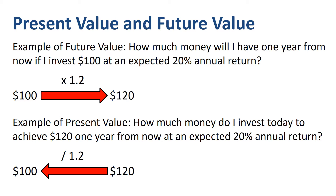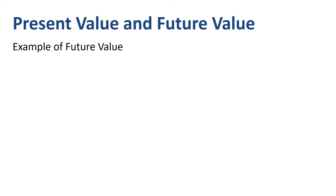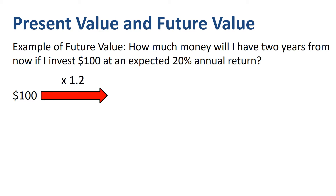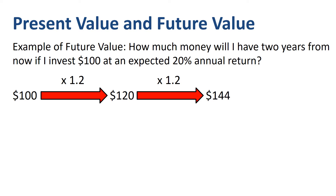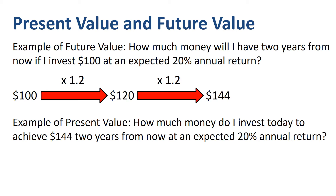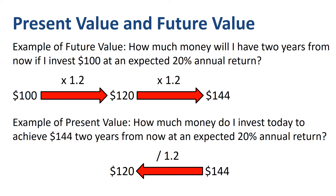You can do this for multiple years as well. How much money will I have two years from now if I invest $100 at an expected 20% annual return? $100 multiplied by 1.2 is $120, and that $120 multiplied by 1.2 is $144. To find the present value of $144 two years from now, divide by 1.2 to get $120, then divide by 1.2 again to get $100 today.